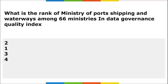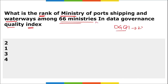The first question is: what is the rank of the Ministry of Port, Shipping and Waterways among 66 ministries in the Data Governance Quality Index? This was released for the third quarter of 2022-23. The rank here is second in the Data Governance Quality Index.